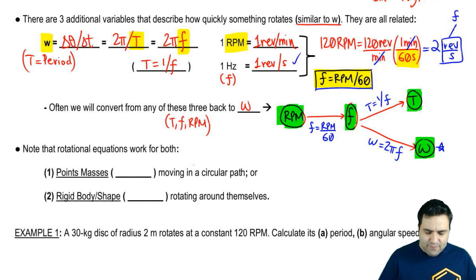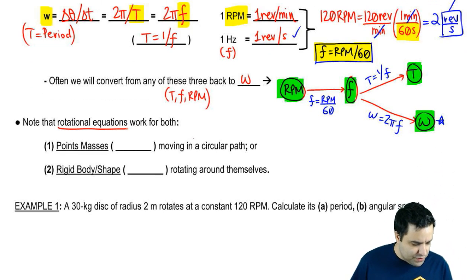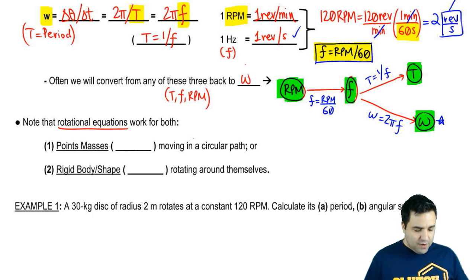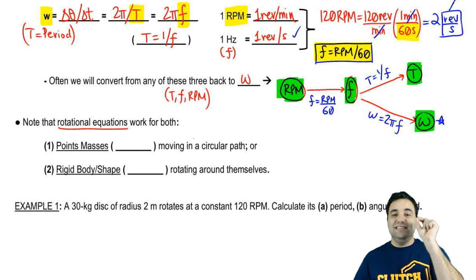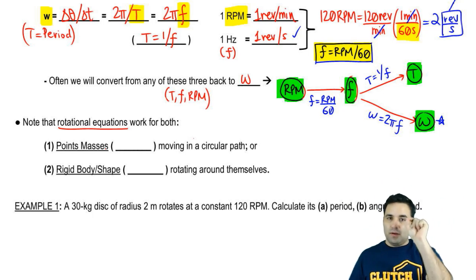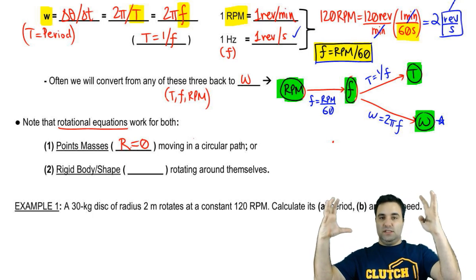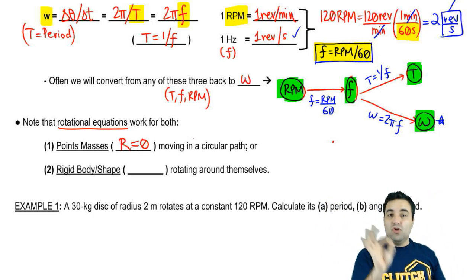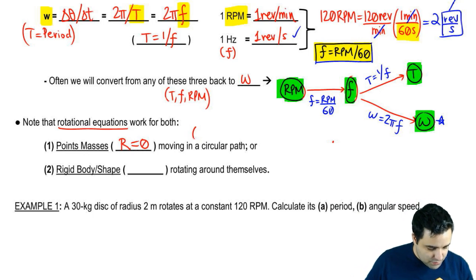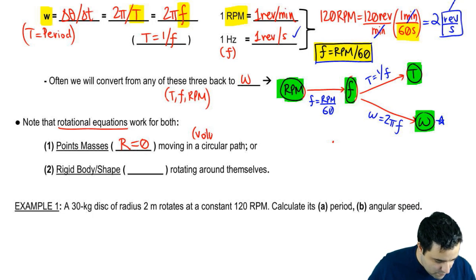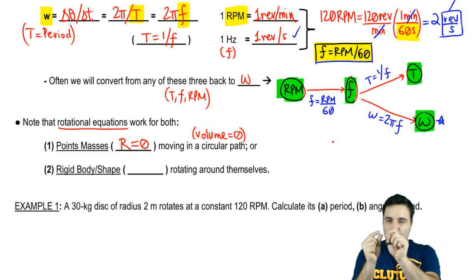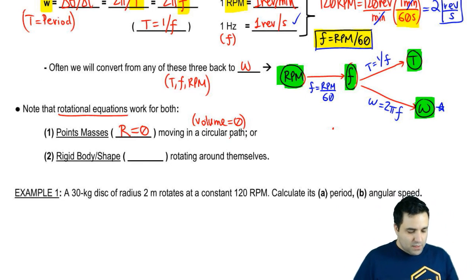One last point before I do an example. Rotational equations work for two different situations. One is when you have a point mass. A point mass is a tiny object of negligible size that spins around a circular path. We call it a point mass because we just represent it by a point. It has no volume. The radius of this object is zero. Imagine a sphere with a radius of zero, it has no radius, it has no volume.